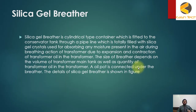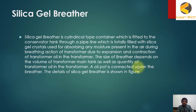Our next topic is silica gel breather. A silica gel breather is a cylindrical type of container which is fitted to the conservator tank through a pipeline, and it is totally filled with silica gel crystals used for absorbing any moisture present in the air during the breathing action of the transformer.